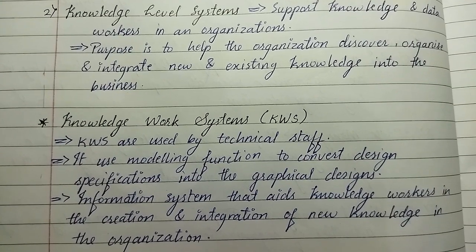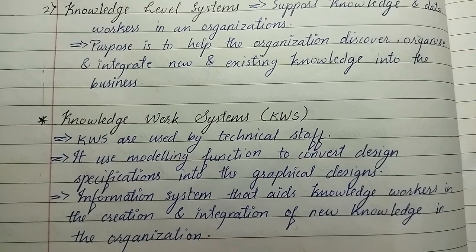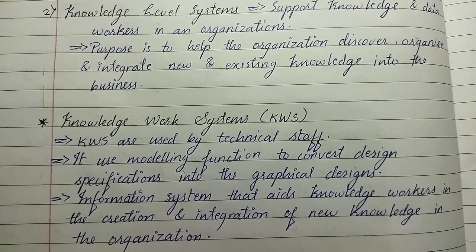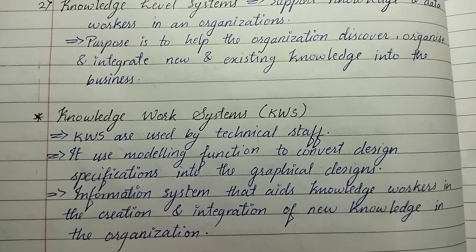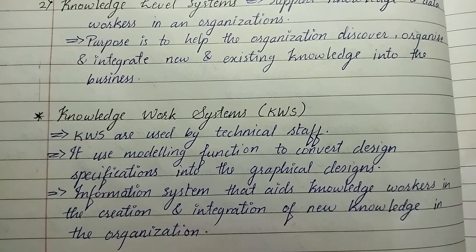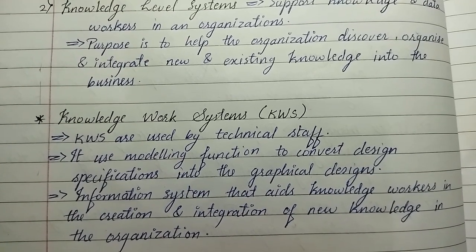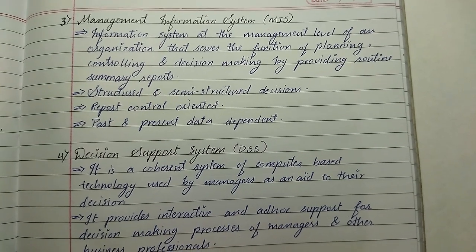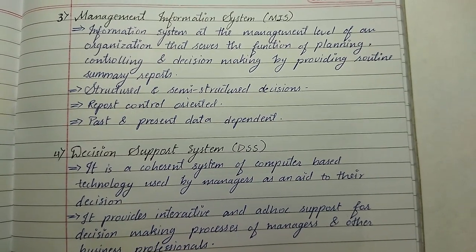Knowledge Work Systems (KWS) are used by technical staff. They use a modeling function to convert design specifications into graphical designs — an information system that aids knowledge workers in the creation and integration of new knowledge in the organization.